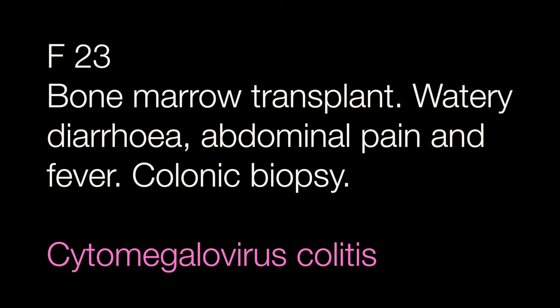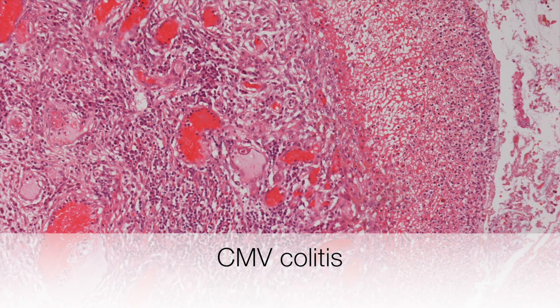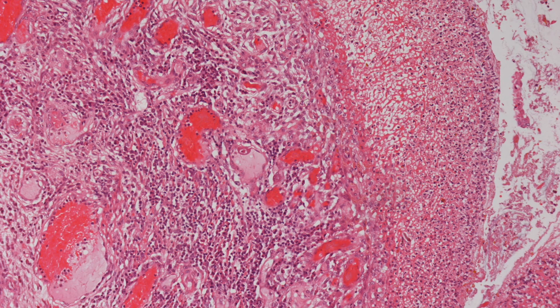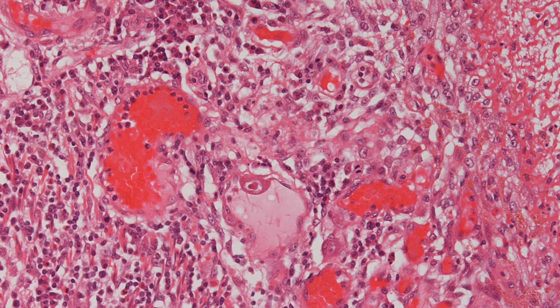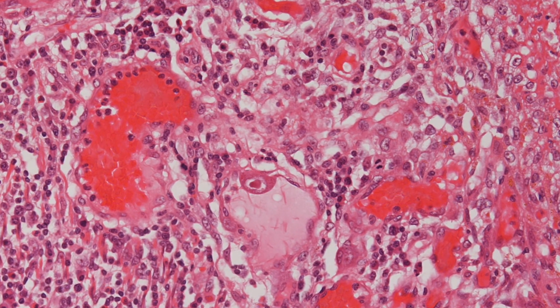The final case was the female of 23 who had a bone marrow transplant, suggesting that she was immunocompromised, and the diagnosis is CMV colitis. The histology of the colon shows ulceration, and as we zoom into the endothelial cells you can see a classical owl's eye CMV inclusion.